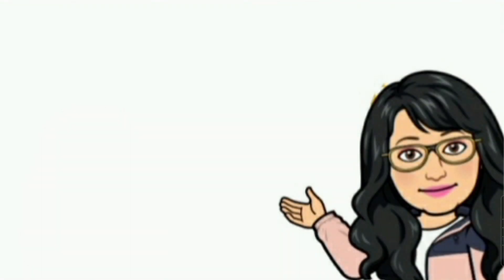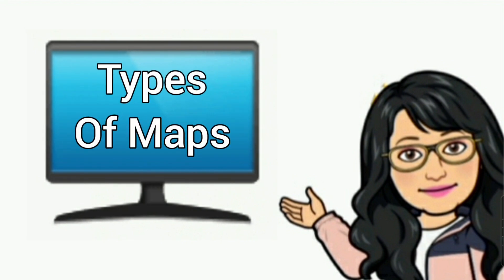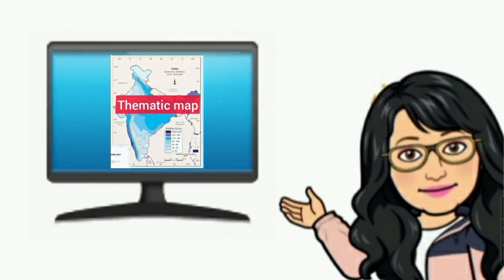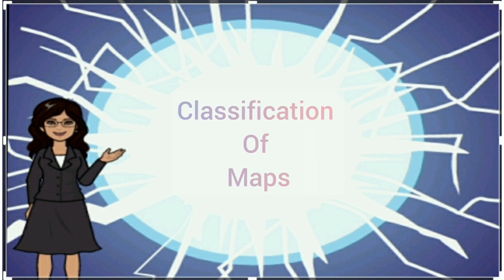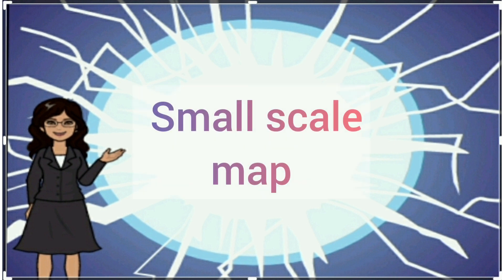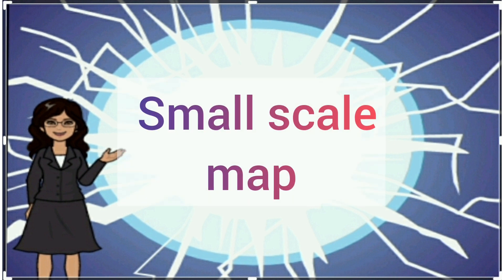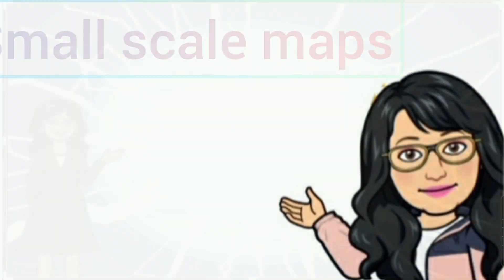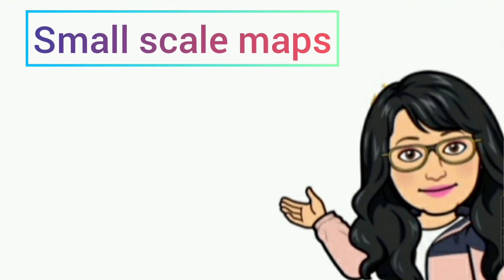In my last video you studied about three different types of maps: political, physical, and thematic. Now we are going to classify maps on the basis of scale. The first one is small scale map and the second one is large scale map. Let us know about each type of map in detail.